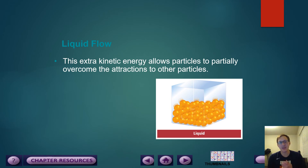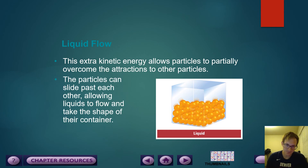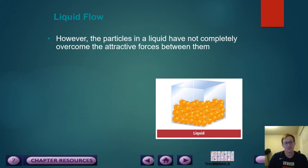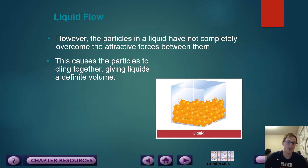Liquid flow: this extra kinetic energy allows particles to partially overcome the attractions to other particles. Remember, as a solid they are confined to a specific geometric shape because of their attractive forces. Now that we're in a liquid, they tend to flow and fill the container they are in. The particles can slide past each other, allowing liquids to flow and take the shape of their container. However, the particles in a liquid have not completely overcome the attractive forces between them — they are still connected, not completely free-flowing yet. This causes the particles to cling together, giving liquids a definite volume.